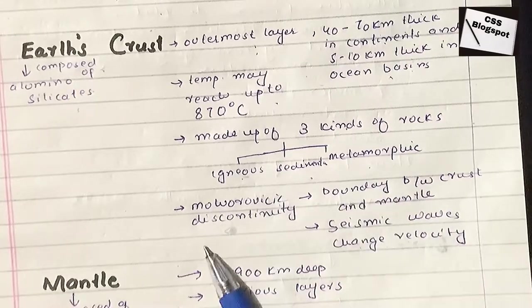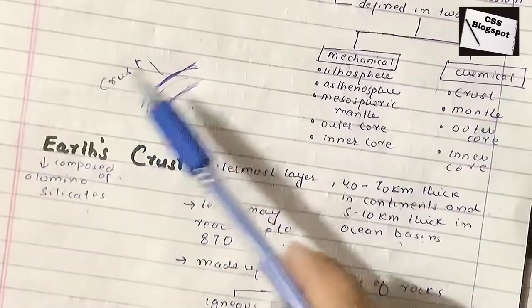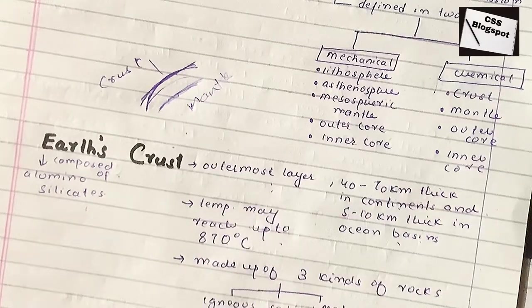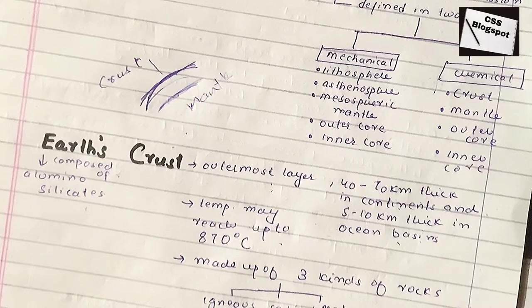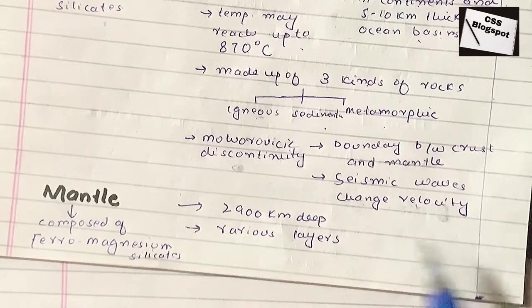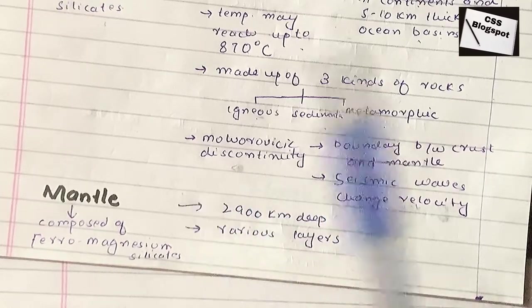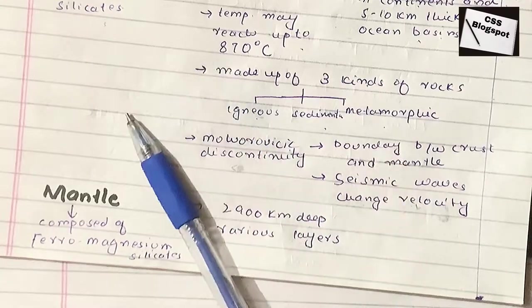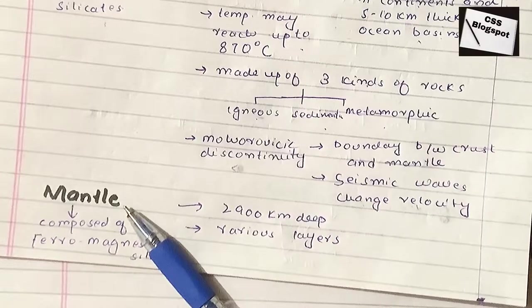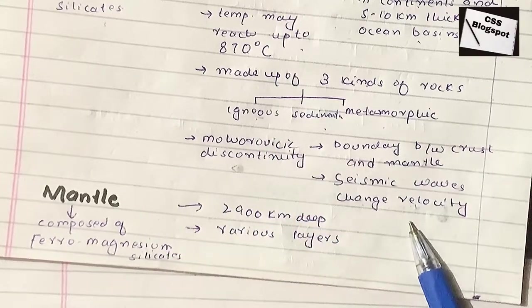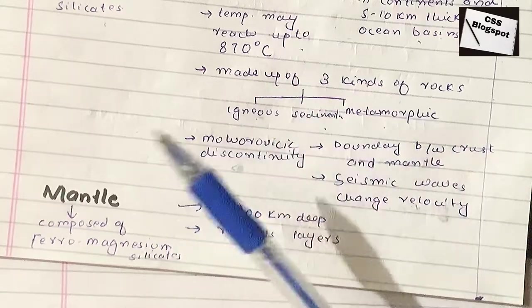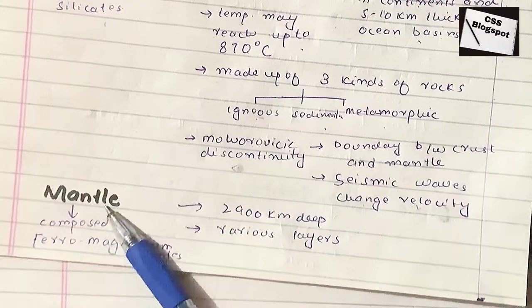The boundary between crust and mantle is called the Mohorovičić discontinuity, or simply Moho. At this boundary, seismic waves change velocity. When seismic waves travel from the crust to the mantle, scientists can detect the velocity change, which indicates that the waves have moved from one layer to another.